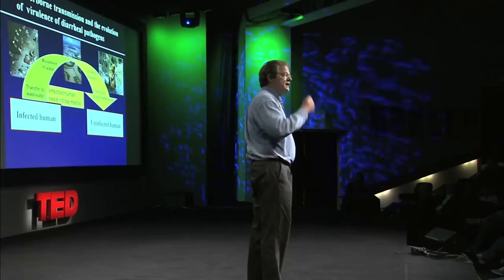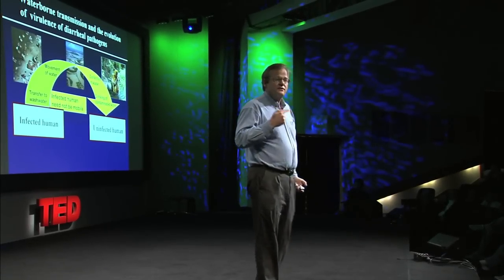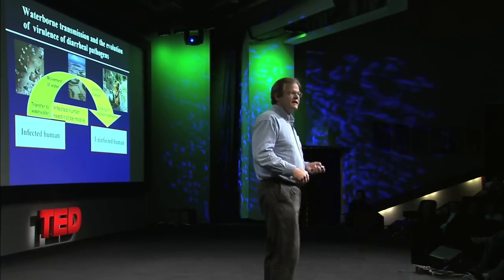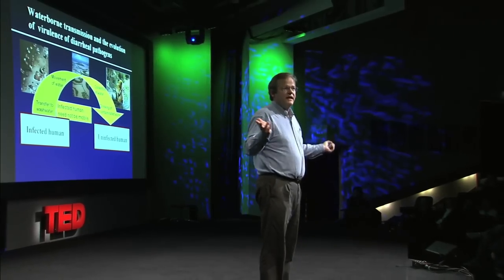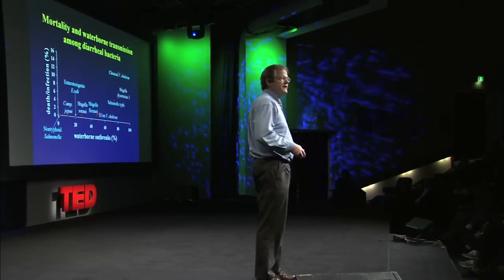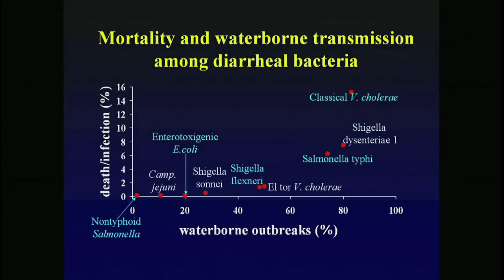The theory tells us that when diarrheal disease organisms are transported by water, we expect them to be more predator-like and more harmful. You can test these ideas by looking at all diarrheal bacteria and seeing whether the ones more transmitted by water tend to be more harmful. The answer is yes — the data points show a very strong positive association between the degree of waterborne transmission and how much death they cause per untreated infection.